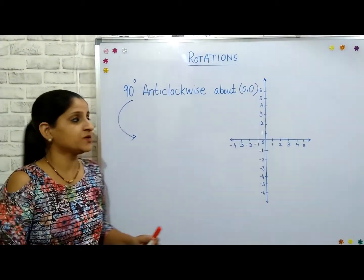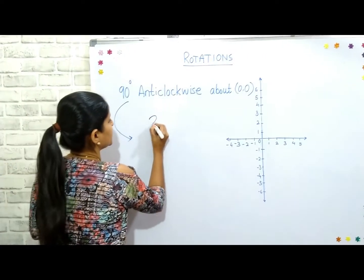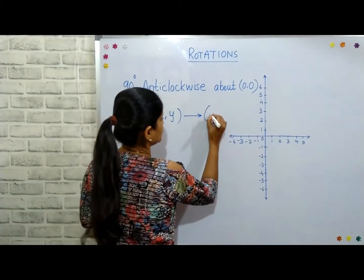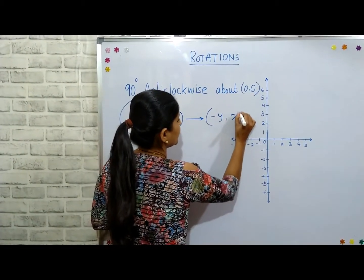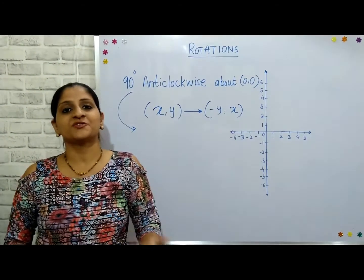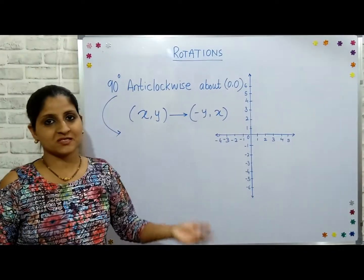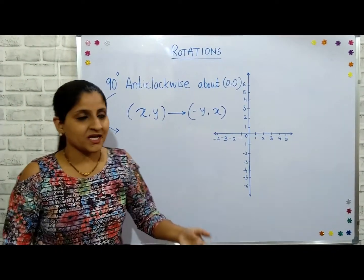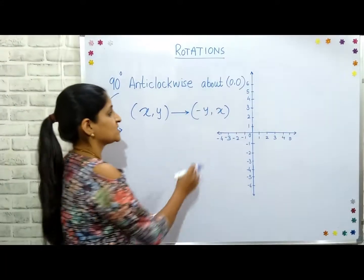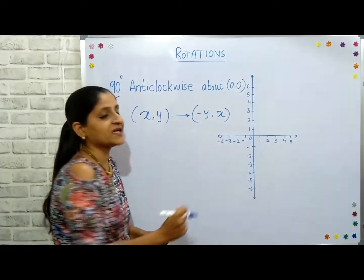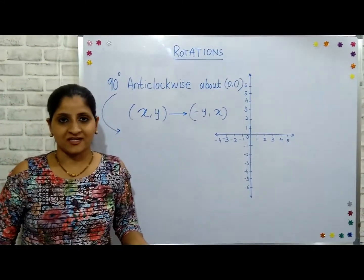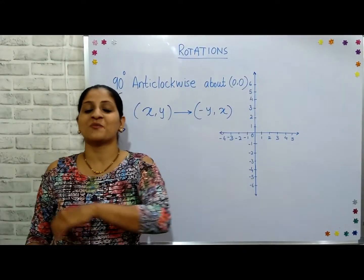If the original coordinates are x and y, after a 90-degree anti-clockwise rotation they become negative y and x. As I told you in the first video, there is a simple trick to memorize the formula. When we are rotating anti-clockwise, we are taking a turn towards our left. That's why after x and y they flip their positions, and the left-side coordinate changes its sign.